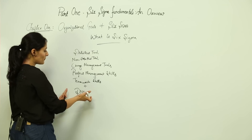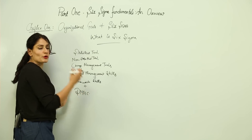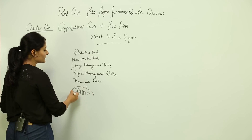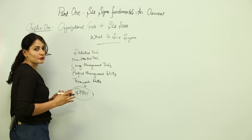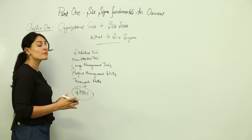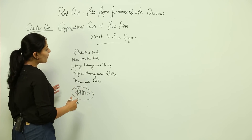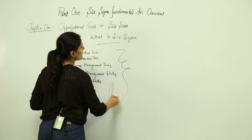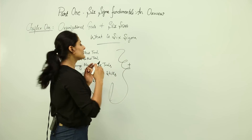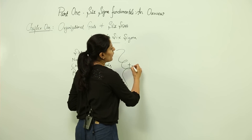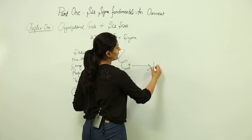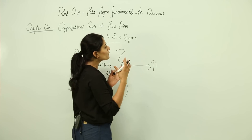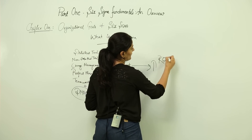DMAIC is the methodology we are going to study throughout this course — it is a very important and effective methodology used in Six Sigma. When all these tools and techniques and skills are used together, they help any organization to increase or boost its return on investment.